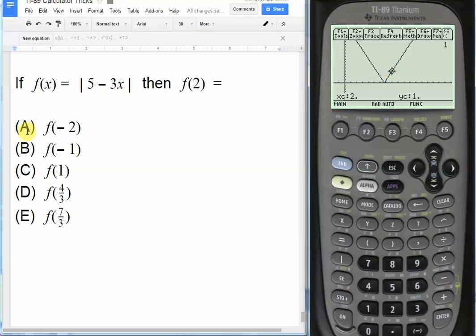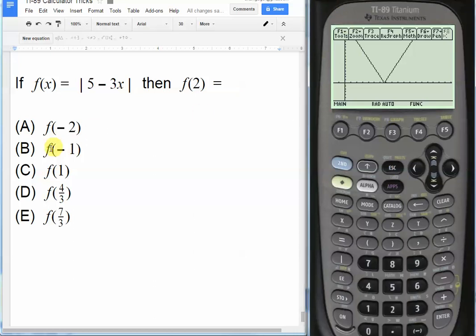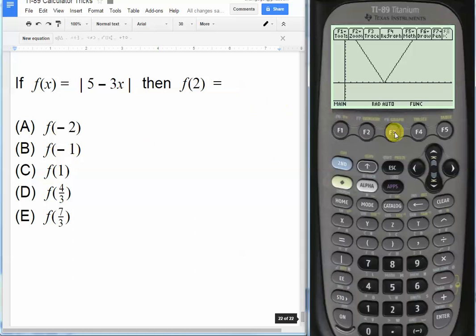So let's plug in the choices. First, f of negative 2. We're pretty sure this is not going to be the answer. Negative 2, enter. See, it's outside our domain. f of negative 2 is way up here. f of negative 1 is going to be, I think, the same thing, where it's actually outside of our domain. Negative 1. And the window can't even get it. We could always zoom out and it'd be easy to find.